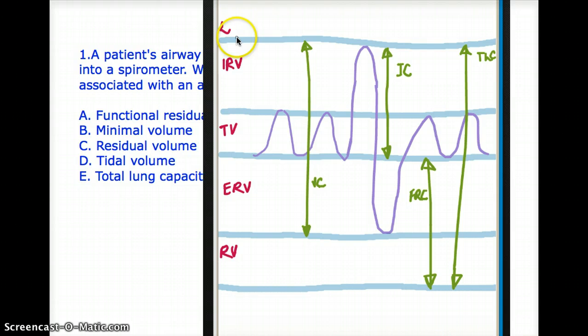The mnemonic that I use is liter, L-I-T-E-R. L for lungs, I for IRV inspiratory reserve volume, T is tidal volume, ERV expiratory reserve volume, and at the end we have the residual volume.